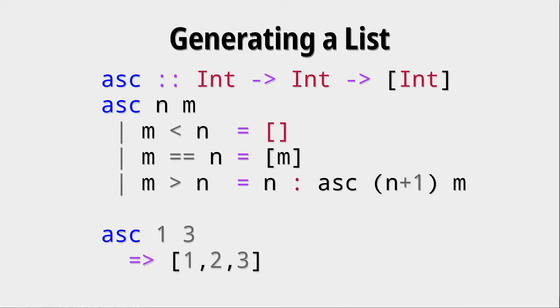Let's look at how to generate a list. We could write a function like this, asc standing for ascending, which creates an ascending list going from n to m. If m is smaller than n, the function doesn't make sense and we just return an empty list. If m equals n, we return a list with only one element in it, namely m.